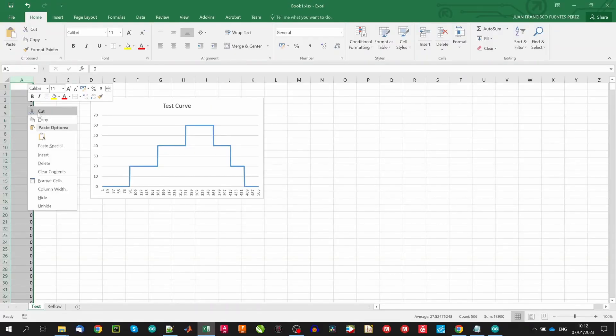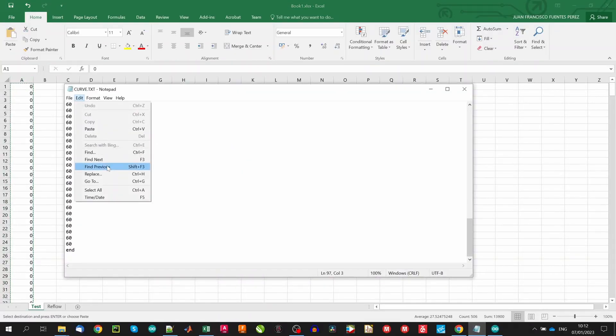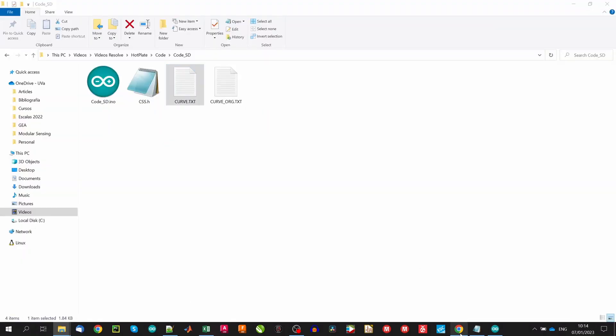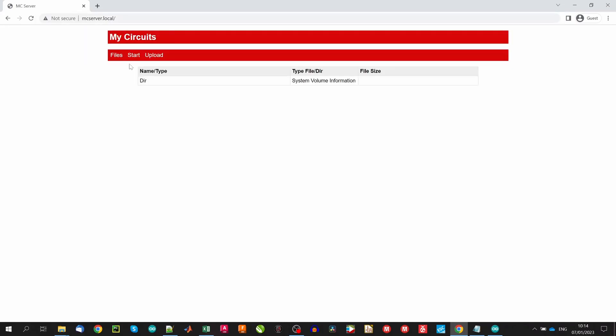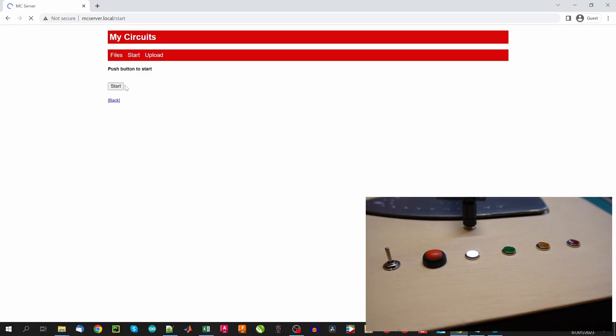First, we are going to define a testing curve and upload to the SD card. For this, we enter to the Wi-Fi connection generated by the hot plate and upload a TXT file with a list of target temperatures every 250 milliseconds.